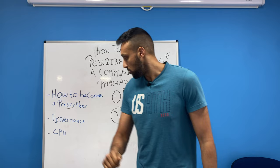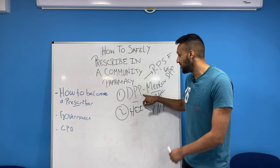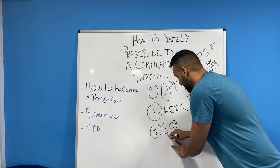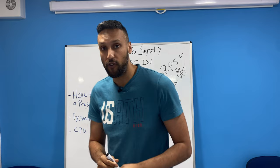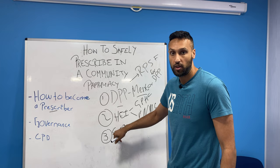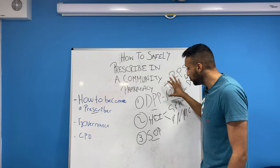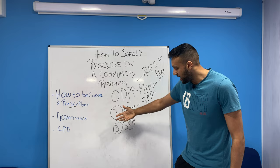So we've looked at the DPP and higher education institutions. Number three is scope of practice. You need to have an area where you're already competent, where you're already seeing patients, diagnosing and treating. That's the area you'll focus on to gain your prescribing qualification. The prescribing course is not designed to teach you clinical skills — it's designed to build on and enhance the skills you already have.